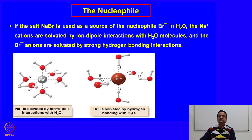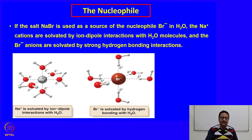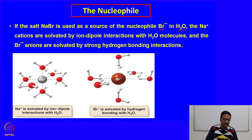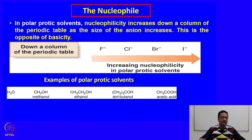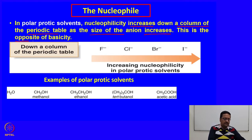When we try to understand how these reactions happen and what ions are present in the solution and how they are stabilized in the solvent: if a salt sodium bromide is used as a source of a nucleophile Br minus in water, sodium plus cations are solvated by ion-dipole interaction with water molecules, and the bromide anions are solvated by strong hydrogen bonding interactions. In polar protic solvents like methanol and ethanol, nucleophilicity increases down the column of the periodic table as the size of the anion increases. This is opposite to basicity.